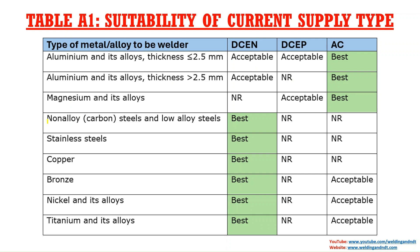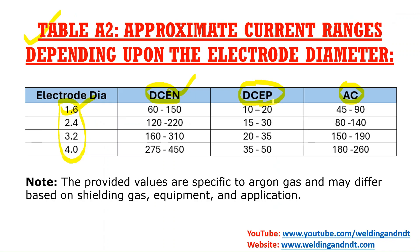For carbon steel, the best configuration will be DCEN — direct current electrode negative. For electrode diameter 1.6 mm, the current range will be 60 to 150 amps. For 2.4 mm diameter it will be 120 to 220, for 3.2 mm it will be 160 to 310, and for 4.0 mm the best current will be 275 to 450 amps.